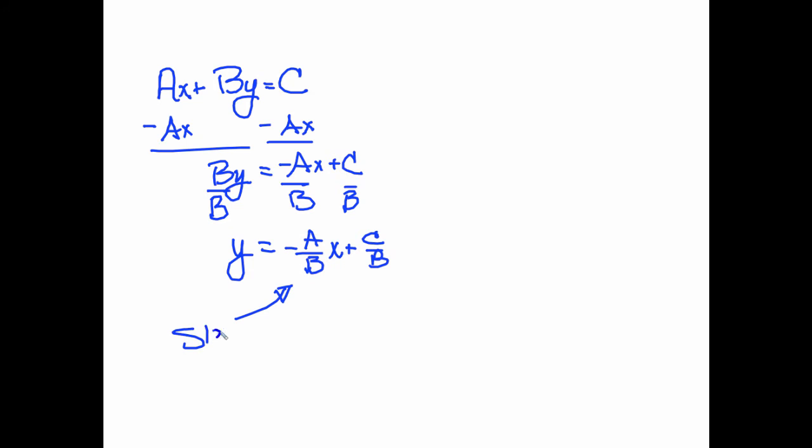We can now see that the slope is negative a over b, and the y-intercept is c over b.